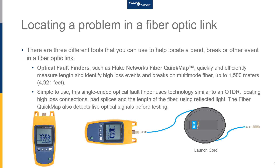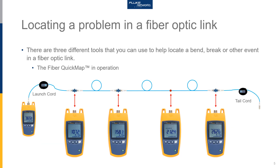Best practice when using one of these tools is to use a launch cord, just like you do with an OTDR. As you can see, I've used a launch cord from our OTDRs. In this demo, I have my FiberQuickMap connected to my multi-mode fiber link, using a launch cord and a tail cord from our OptiFiber Pro OTDRs. It's good practice to use both a launch and a tail cord.